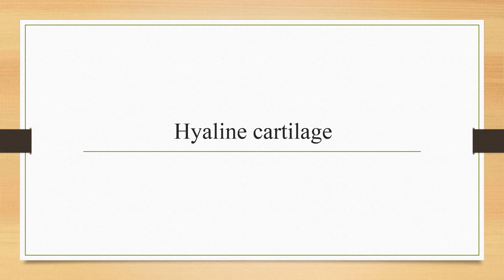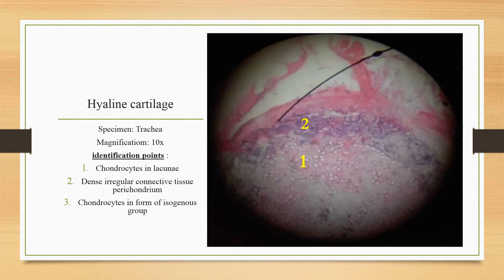First, we will discuss the hyaline cartilage slide — how to identify it at low magnification under the light microscope, and how to differentiate it from fibrocartilage and elastic cartilage. This is a tissue taken from the tracheal wall. As you know, the tracheal wall contains hyaline cartilage in the form of C-shaped rings.